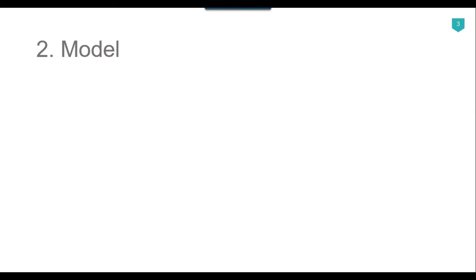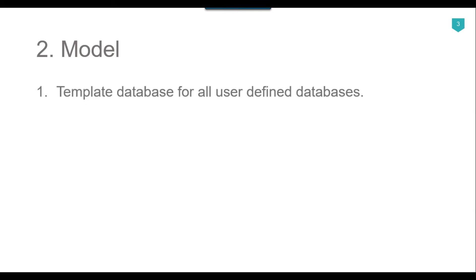The second database is the model database. The model database is the template database for all user-defined databases. You can set different settings for the model database — for example, you can set the recovery model, the MDF file path, the log file path, or the collation. You can set any settings for the model database, and when you create a new database using the CREATE DATABASE command, the new database will be created according to the properties of the model database.